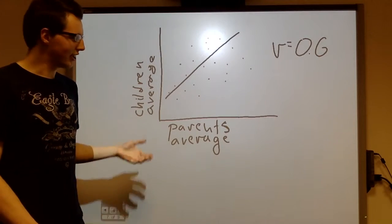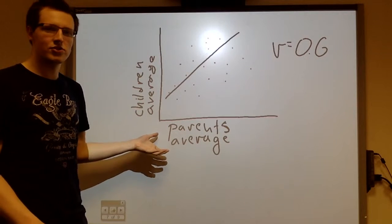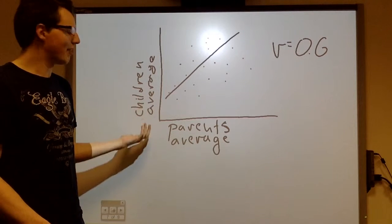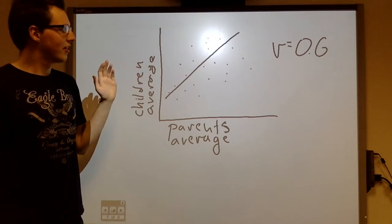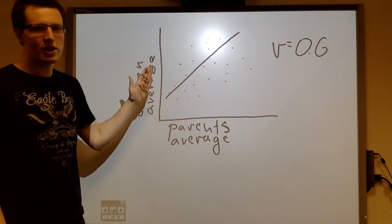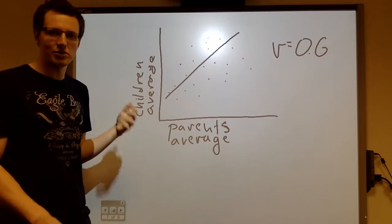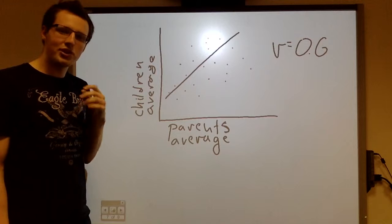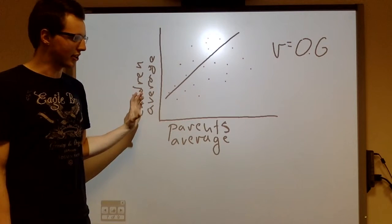In humans, traditionally, you calculate heritability by looking at average of the parent's trait versus the average of the children's trait. So, in this example, the average of the parent's trait versus the average of the children's trait produces a correlation of 0.6, and this is equivalent to a 60% heritability. So, what this would mean is 60% of the phenotype is due to genetics in this particular scenario.